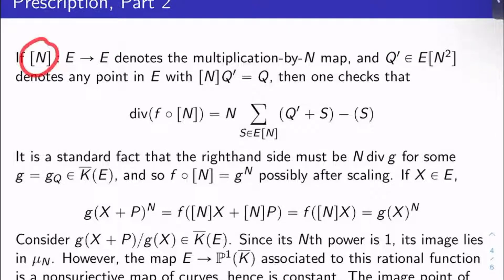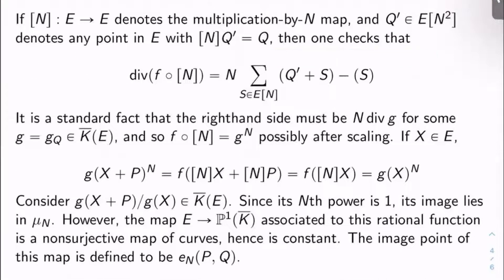So let's let [N] from E to E be the multiplication by N map. Now let's take Q′ to be an N² torsion point of E, any N² torsion point of E, such that when you multiply it by N, you get Q. Of course, you can find such a point, right? What you check then with a little bit of elbow grease is that what's the divisor of f composed multiplication by N? That's the question. Well, it turns out to just be N times the sum overall N torsion points of E, which I'll call S, of the formal point (Q′ + S) minus the formal point (S).